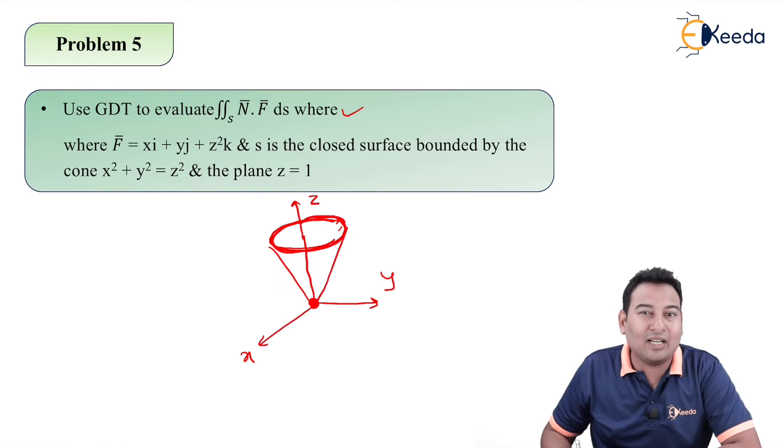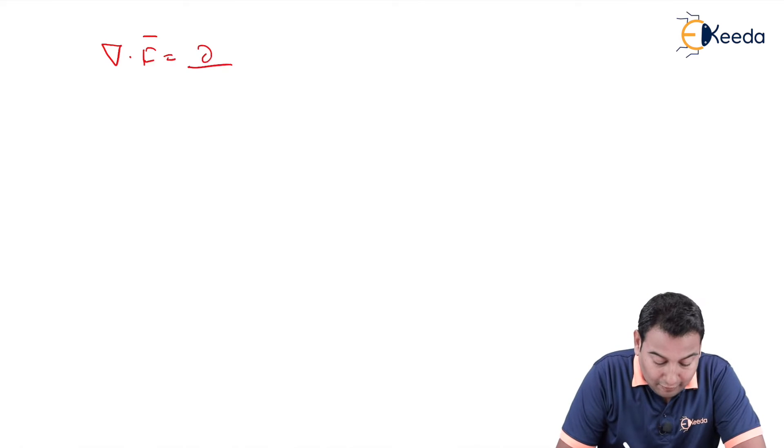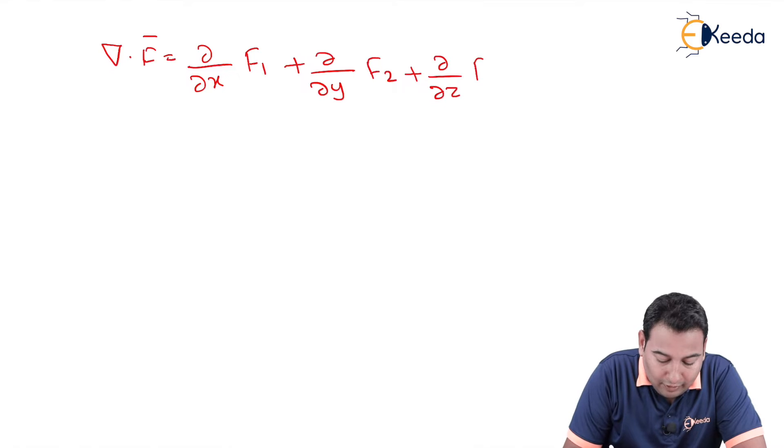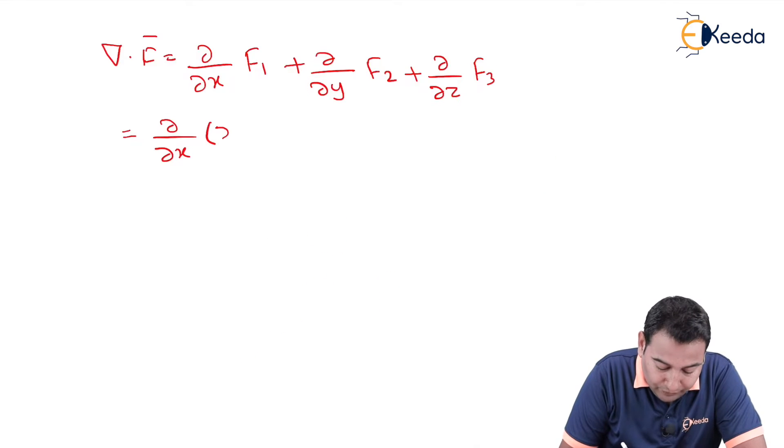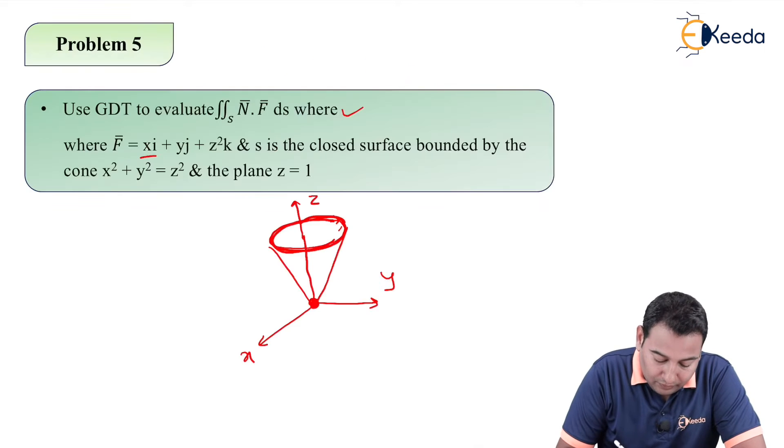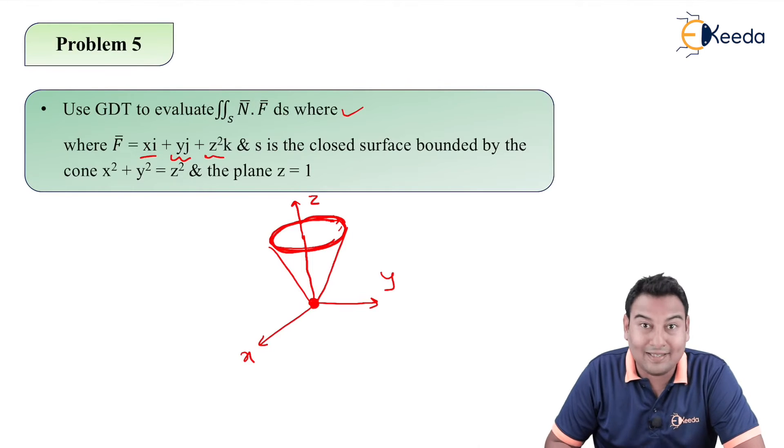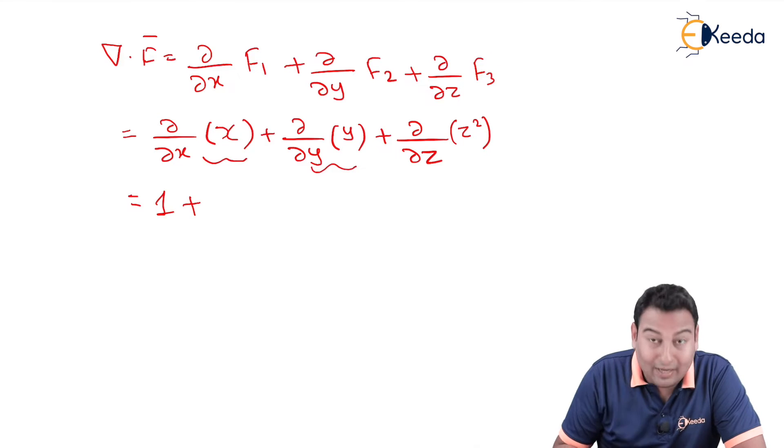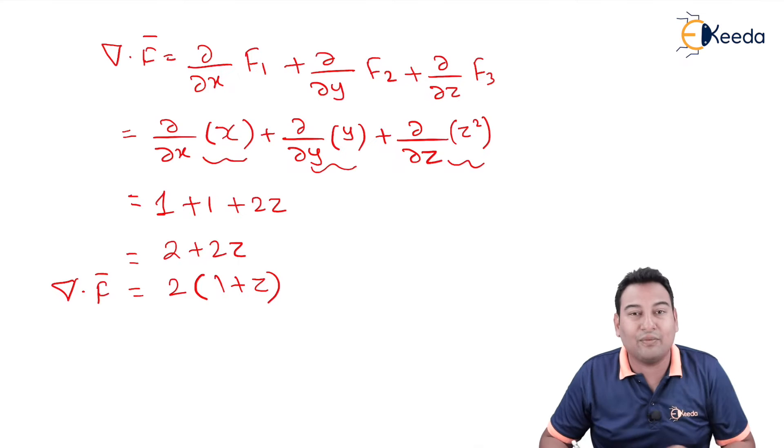First of all, since it is GDT, let's find del dot F bar. Del dot F bar equals divergence: d/dx of f1 plus d/dy of f2 plus d/dz of f3. d/dx of f1 is x, that is with i. d/dy of f2 is y, plus d/dz of f3. f3 is z square. Let's take the differentiation: this is 1, with respect to y this is also 1, with respect to z this is 2z, which equals 2 plus 2z. You can take 2 common: 1 plus z. This is del dot F bar, that is divergence of F bar.